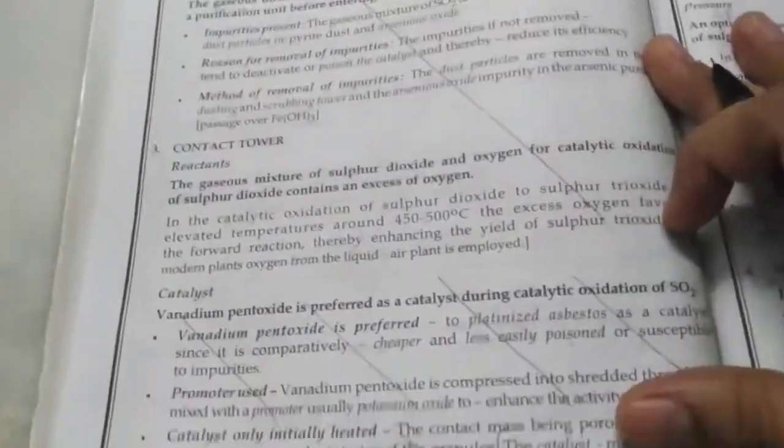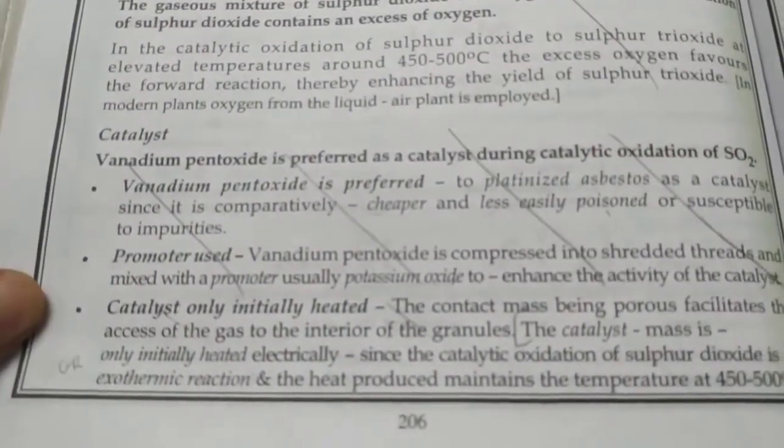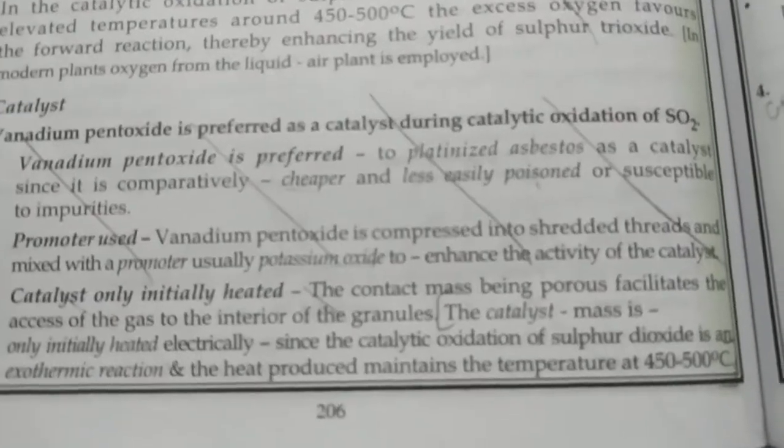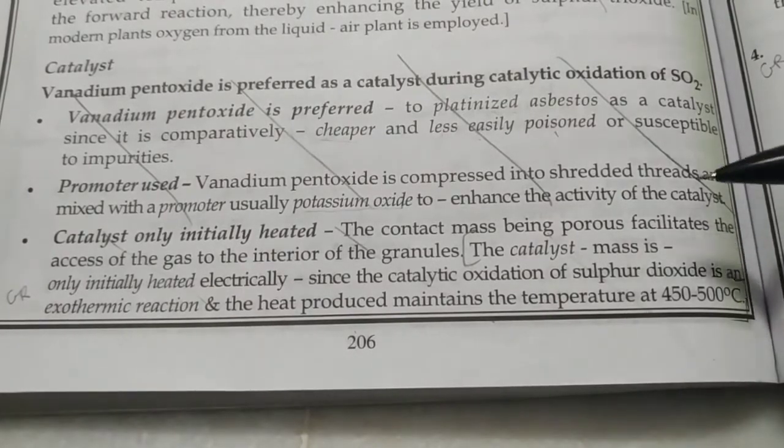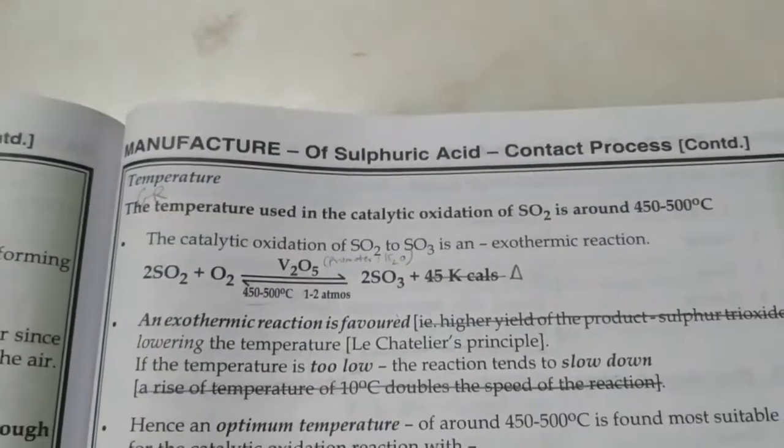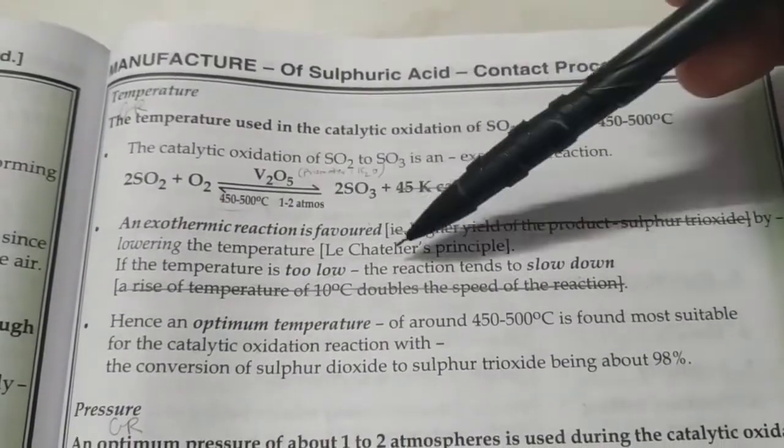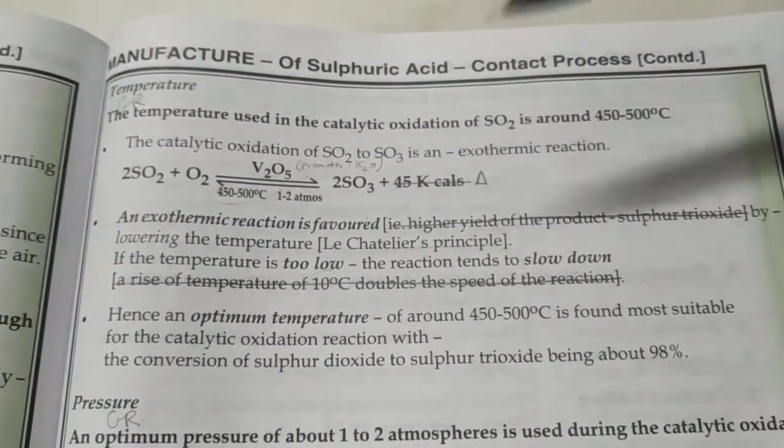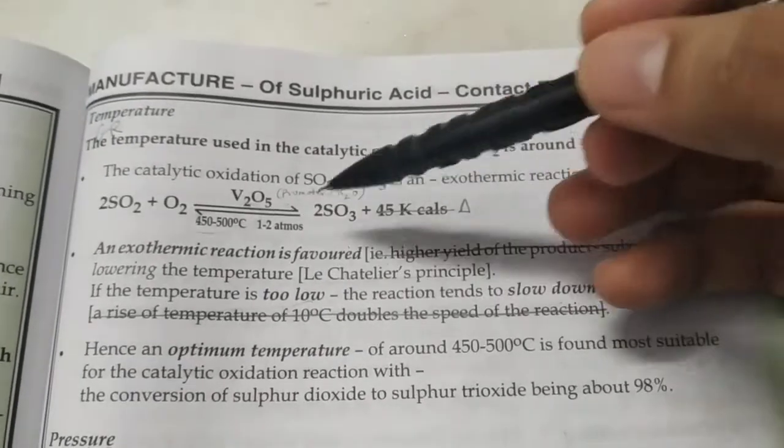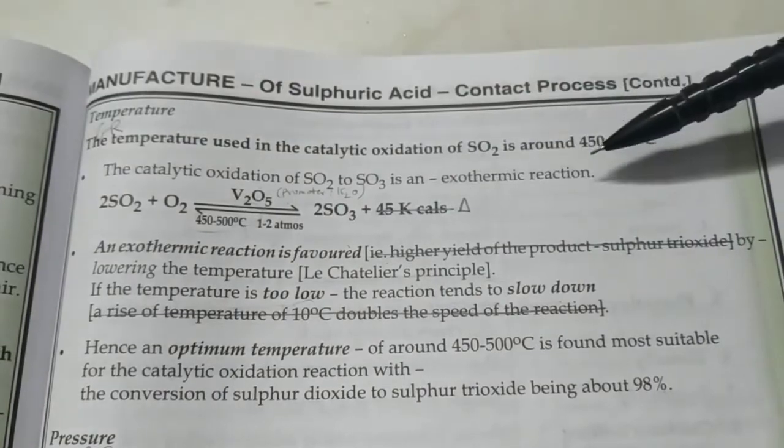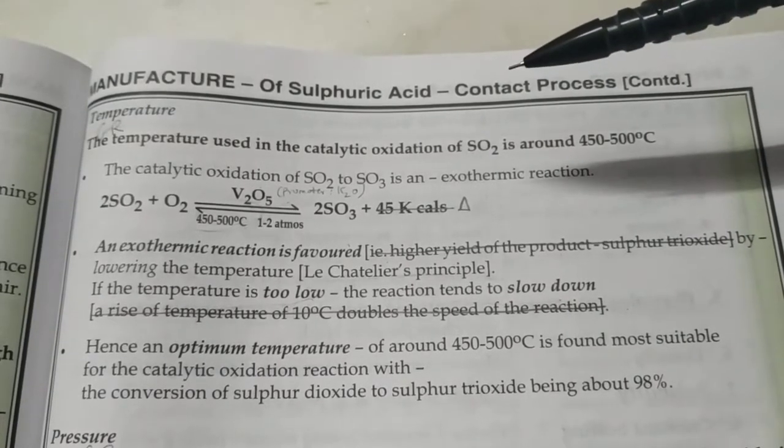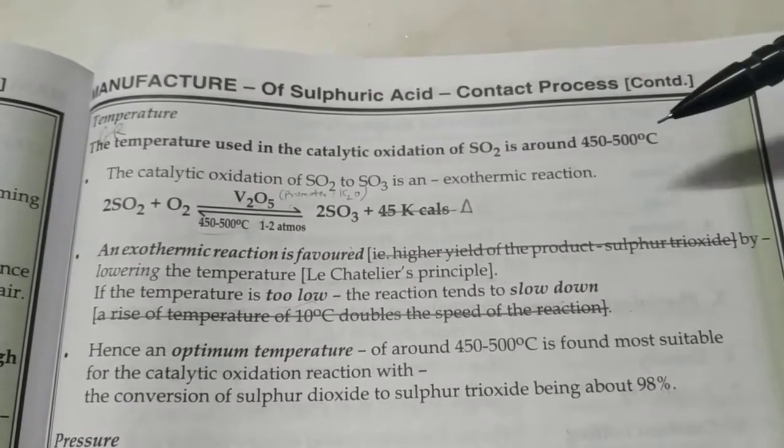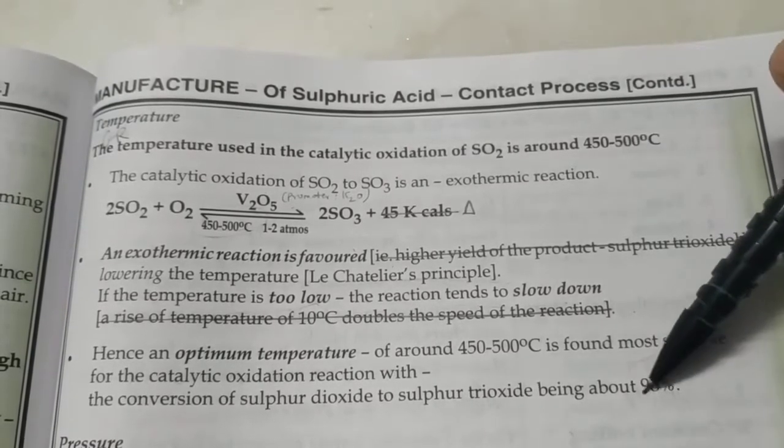The catalyst needs to be heated only initially because once the reaction starts the temperature is maintained, it's an exothermic reaction. Why should we maintain the temperature at 450 to 500°C? It's an exothermic reversible reaction, so as per Le Chatelier's principle if the temperature is low then the forward reaction is favored, but if it is too low then the reaction will slow down. Keeping both points in mind, this is the optimum temperature to get 98% conversion.